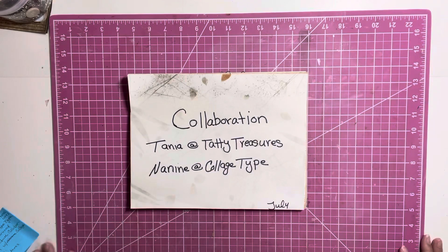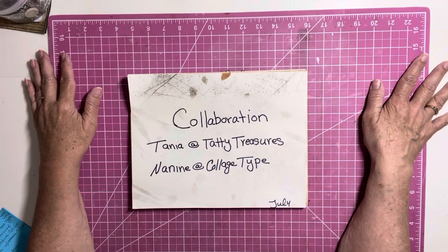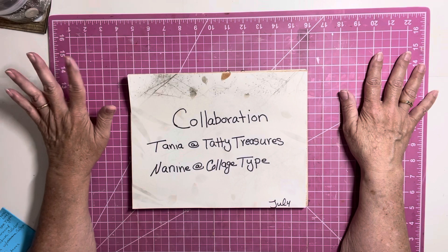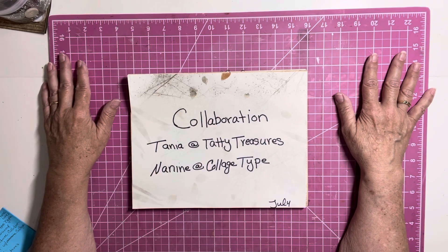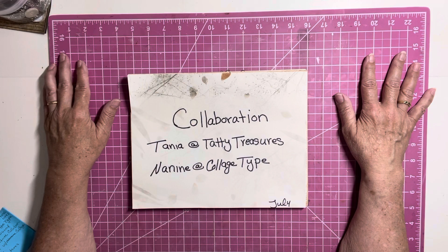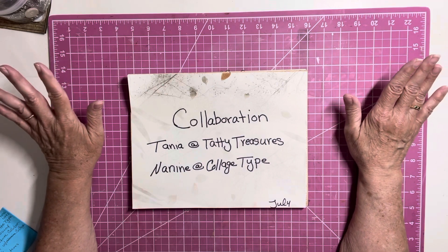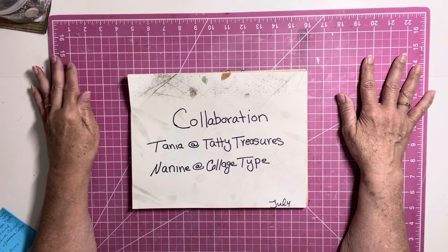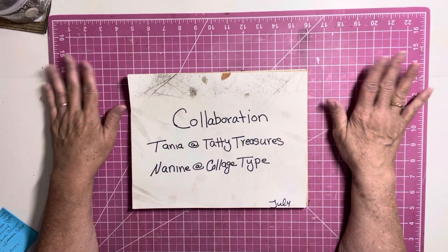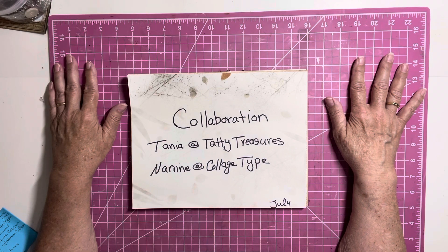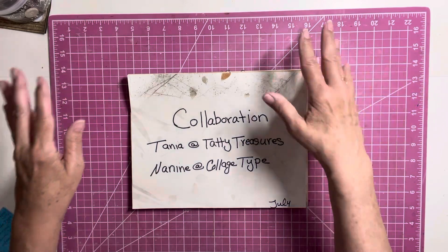I am here today to introduce you to a collaboration that I was graciously invited to take part in, and I am so thankful. This collaboration is with Tanya at Taddy Treasures and Neneen at Collage Type. This is a collaboration for July. So for the month of July, I will be working with these beautiful kits that I'm going to show you and making a journal and some ephemera. So let's get started here.